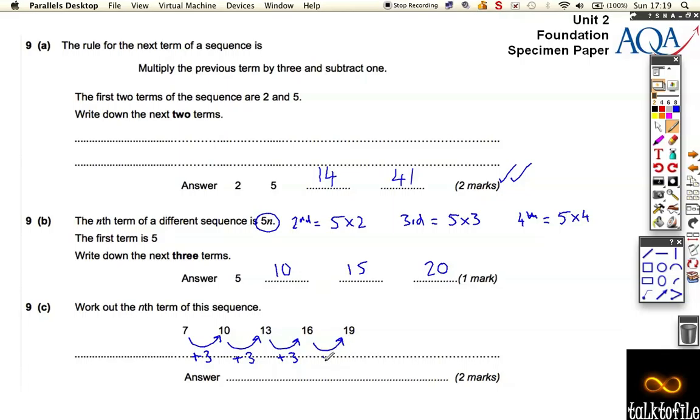If it's going up in threes, then the first part of our sequence is 3n. But that's not everything. We need to find out what comes before our sequence. So the step was 3. Where does it start? Well, it's got to start at 4 originally, because then when I jump through I get to 7 for my first term.